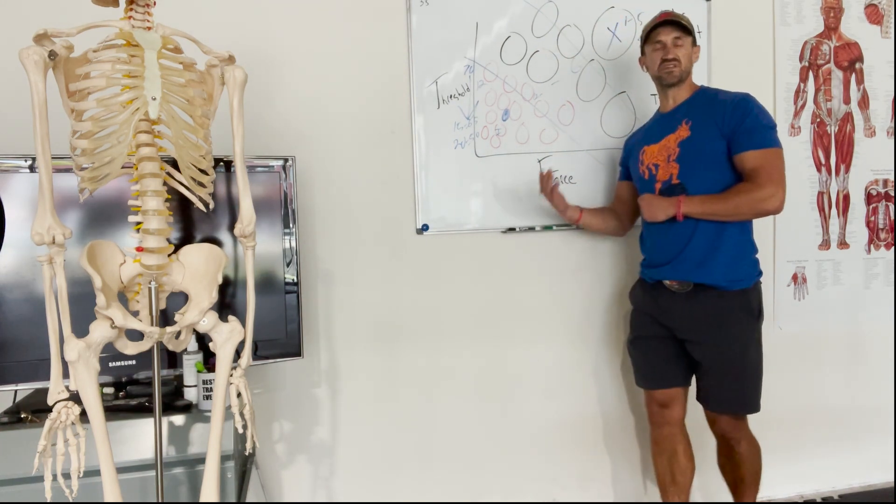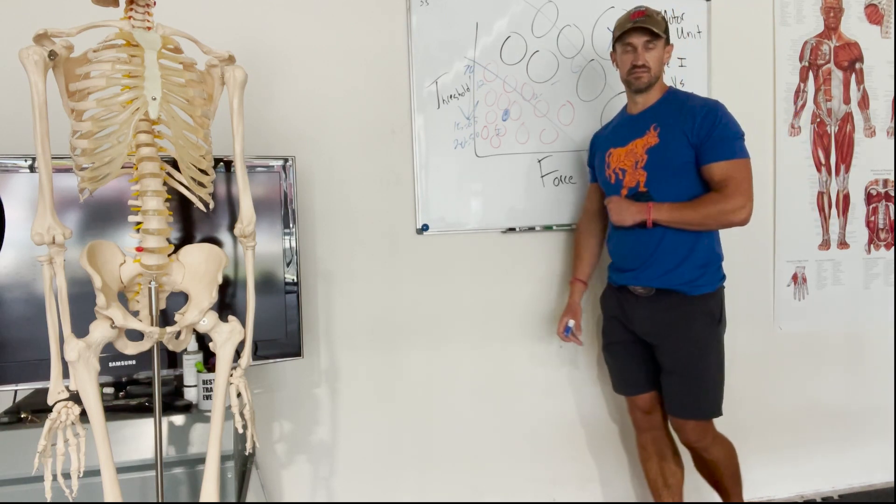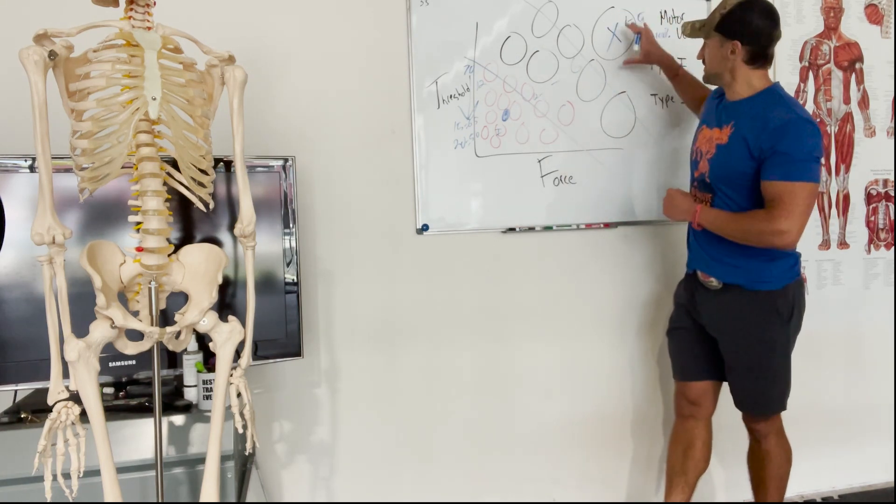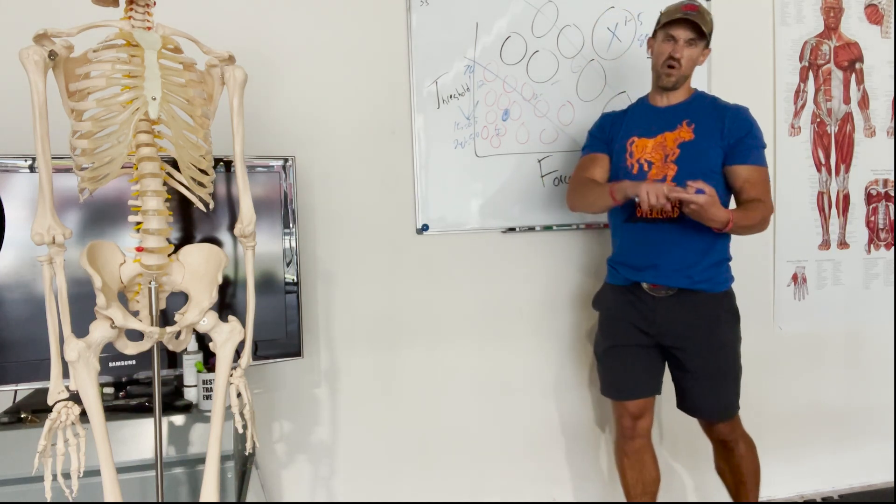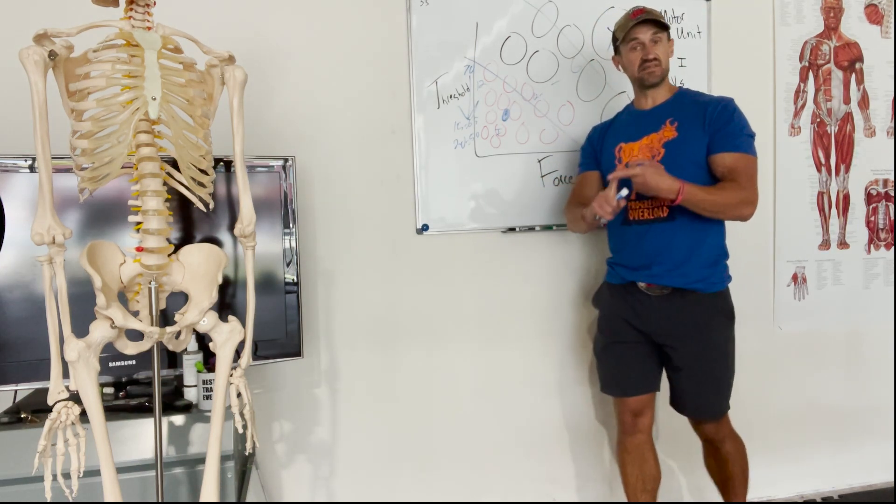After a month, we can start getting down to ten, eight, six reps. Then we can start going heavy. So maximal weight, one to twelve reps. That's going to be type 2 recruitment.